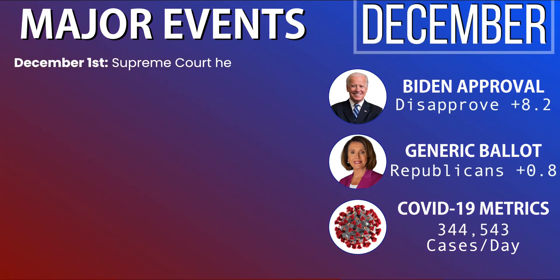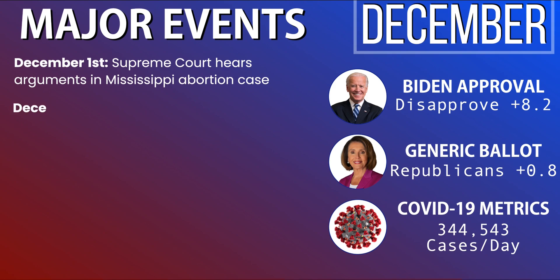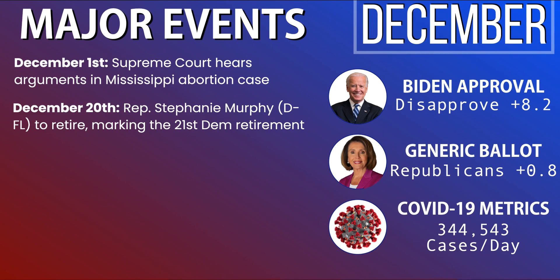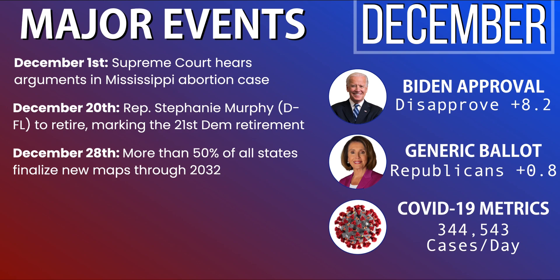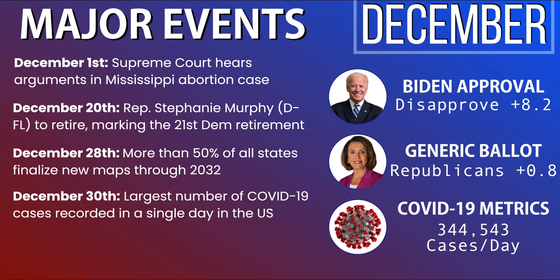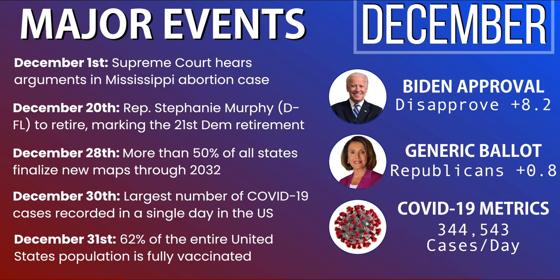In the month of December, on December 1st, the Supreme Court decided to hear arguments in the Mississippi abortion case rather than dismissing it entirely, citing Roe v. Wade. On December 20th, Representative Stephanie Murphy of Florida announced her retirement, marking the 21st Democratic retirement. On December 28th, more than 50% of all states finalized their new redistricting maps through 2032. On December 30th, the United States recorded its largest single-day COVID-19 case count ever. On December 31st, 62% of the entire U.S. population was fully vaccinated. Biden's approval holds at disapprove plus 8%, Republicans maintain a generic ballot lead of 0.8%, and COVID cases hit a record 344,000 per day at month's end.